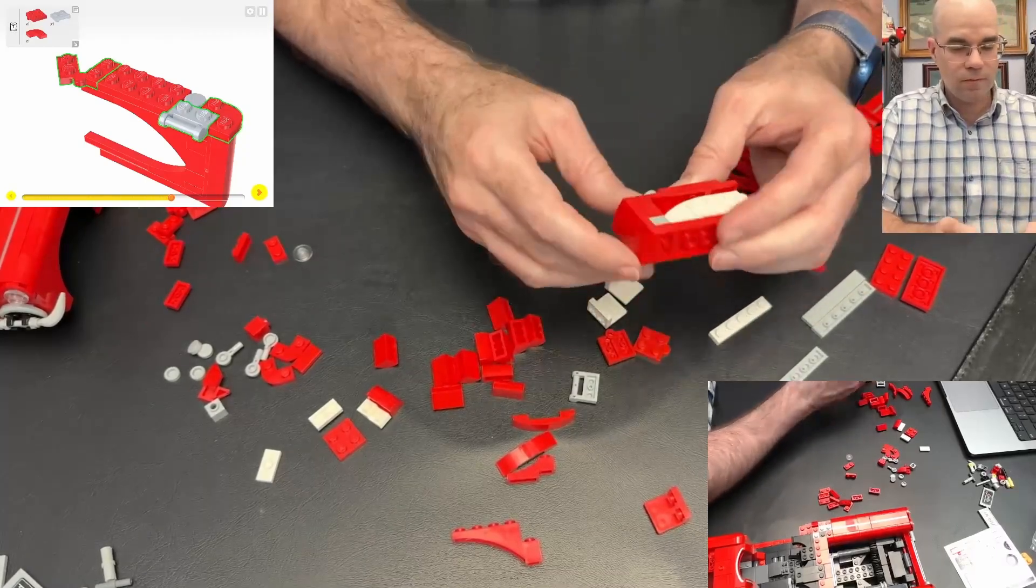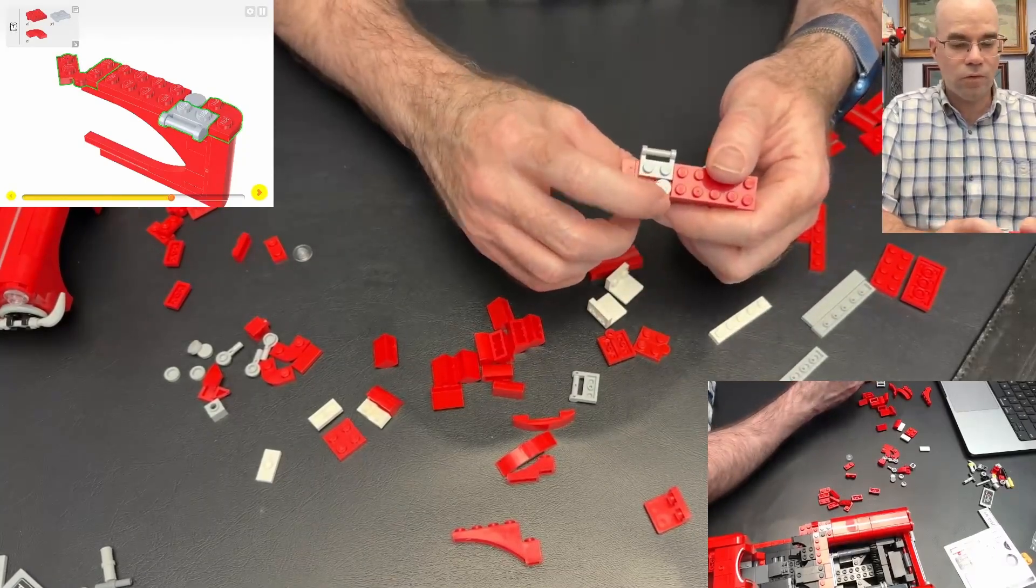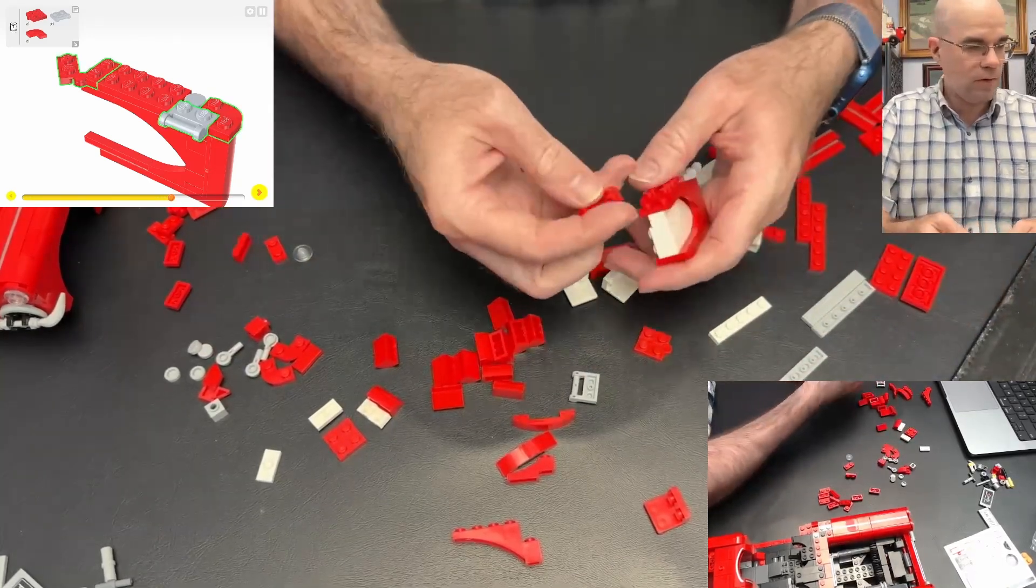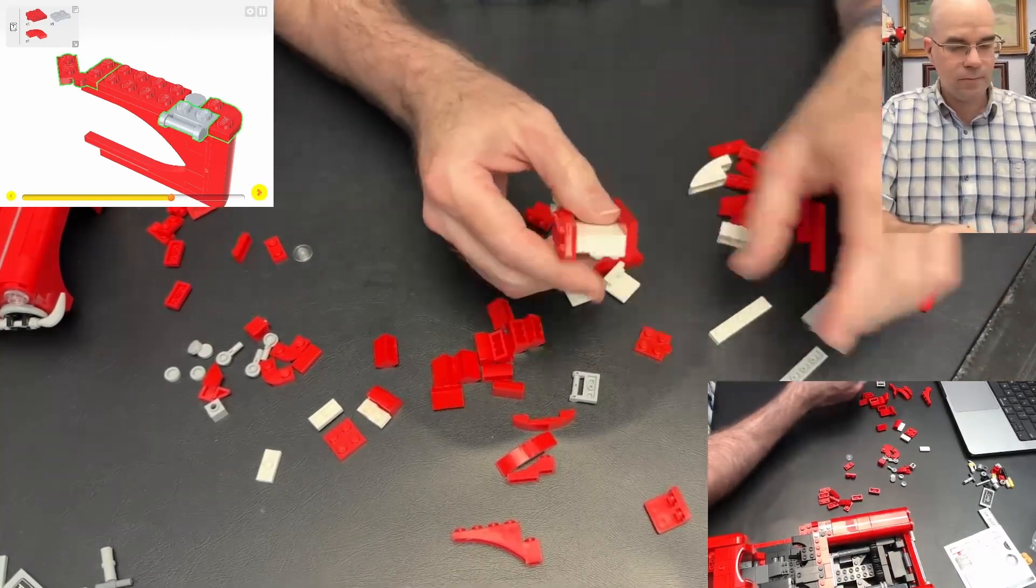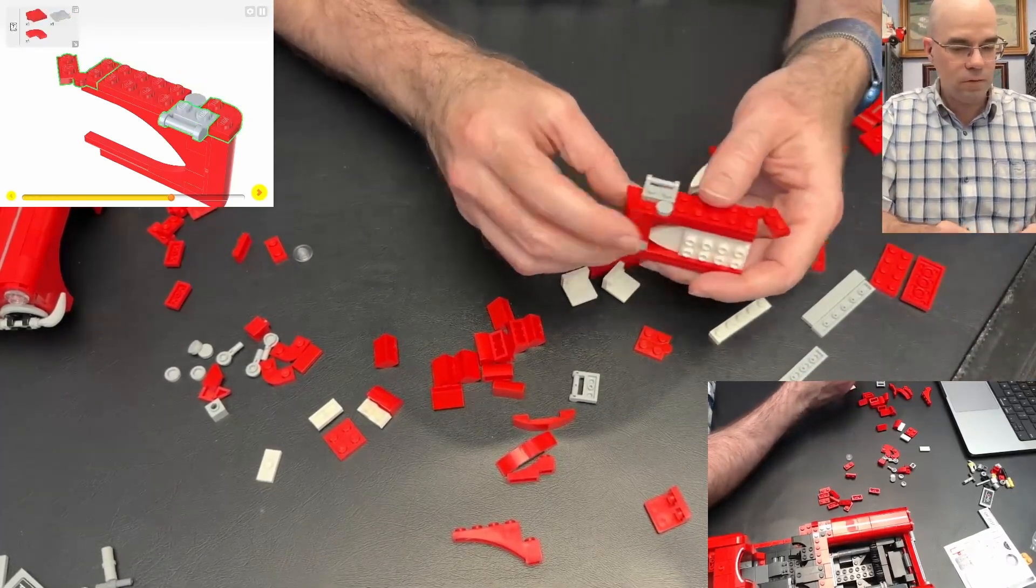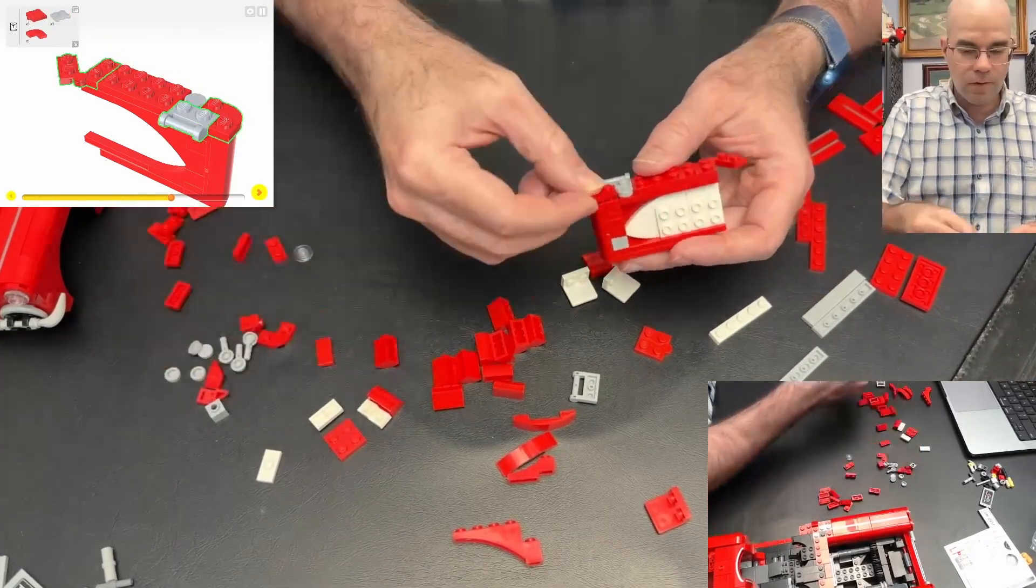I guess that's the door lock, that little gray tile. Oh, there's a curved plate over here.